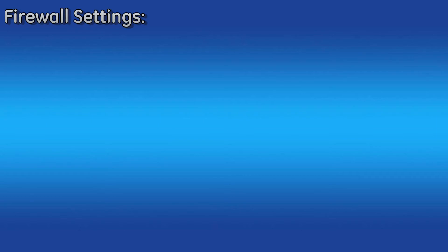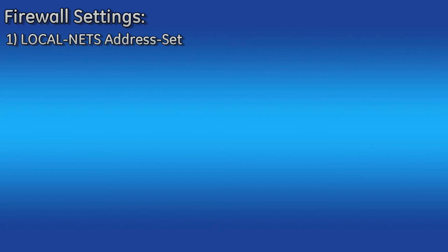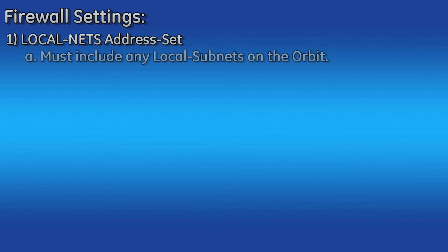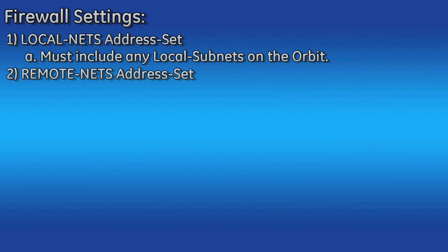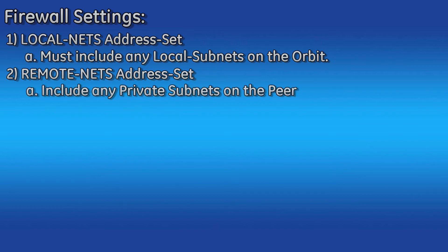Now that we have covered all of the IPSec parameters, we can move on to the firewall settings that will be required. If you are not familiar with how the firewall in Orbit works, please see our other videos on this topic. At the top of the firewall service is an address set called local nets, set to 192.168.1.0/24 by default. Make sure you modify this to contain any local subnets on the Orbit. Next, create a new address set called remote nets, which will contain any subnets on the local side of the other IPSec gateway. By default, the cell interface uses in-untrusted for the input filter and out-untrusted as the output filter.